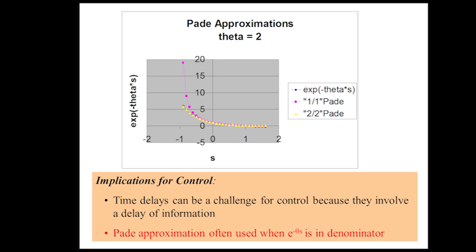So we're trying to approximate e to the negative theta s. We're interested in time delays greater than or equal to zero. This shows the Padé 1-1 approximation, the 2-2 Padé approximation, and then the blue line is the actual exponential. For the period we're concerned about — time delay greater than or equal to zero — they fit very well. Padé is a good approximation, and Taylor series is also very easy to apply, though not quite as good.